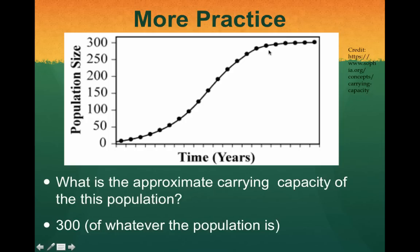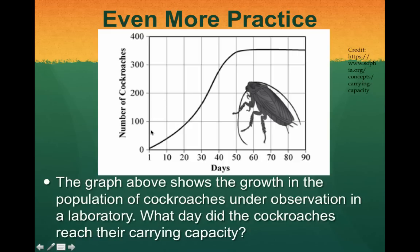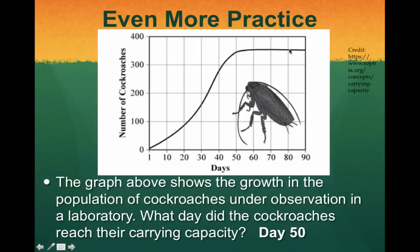Maybe the population runs out of space, or maybe it runs out of food — there are lots of different things a population could run out of. Now let's try another one. This graph shows the growth of a cockroach population under observation in a laboratory. What day did the cockroaches reach their carrying capacity? You should have chosen day 50, because that's where it starts to level out. On days 30 and 40 the population is still growing, but at day 50 we're maxing out on the number of organisms. Feel free to rewind and watch this again — tomorrow we're going to be practicing limiting factors and carrying capacities.